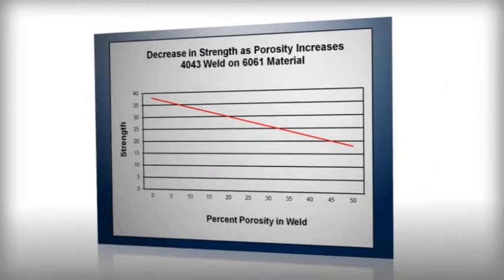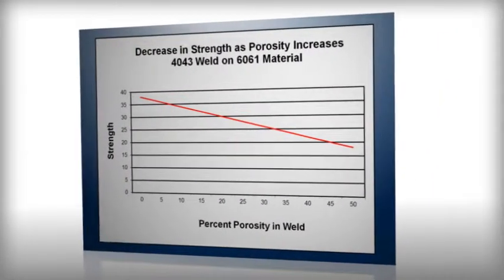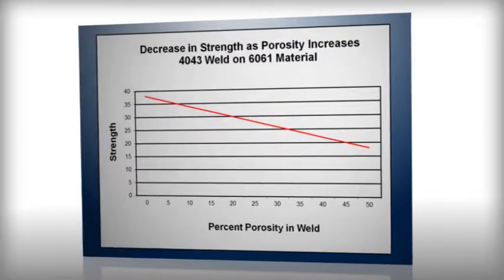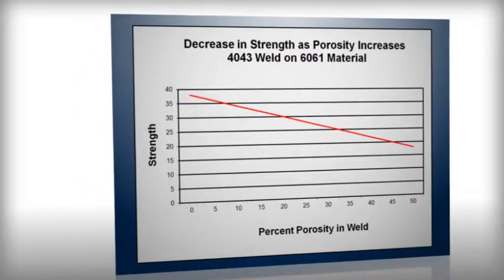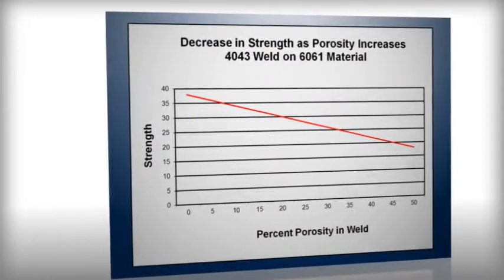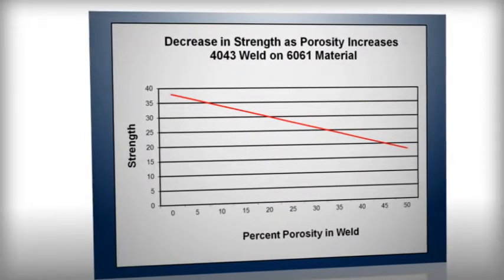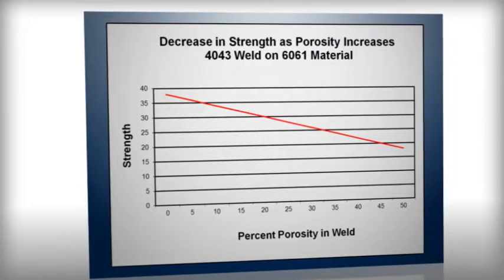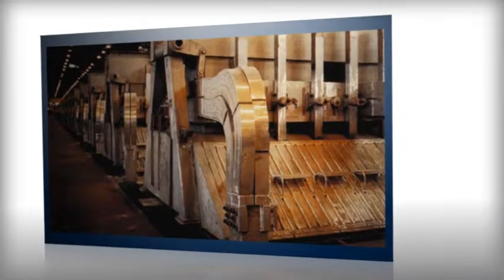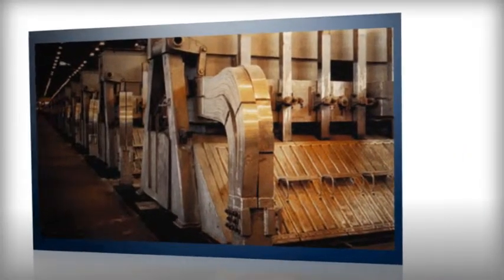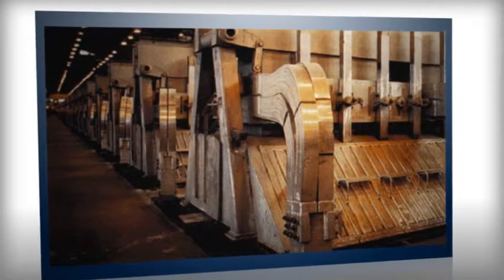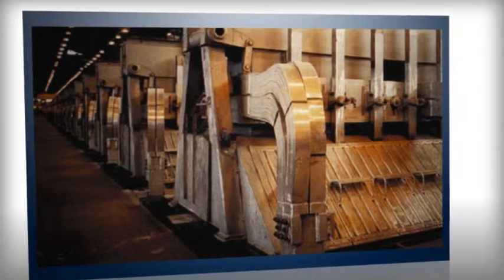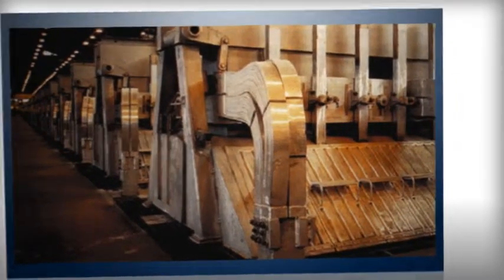The major issue with porosity is that the more you have, the more it starts to affect the properties of the welds. The mechanical strength of the weld is reduced because it's not all weld — it's gas, and gas has no strength. If your weld is on something that conducts electricity like a smelter bus bar, then you decrease the electrical conductivity of it because part of the weld is gas.